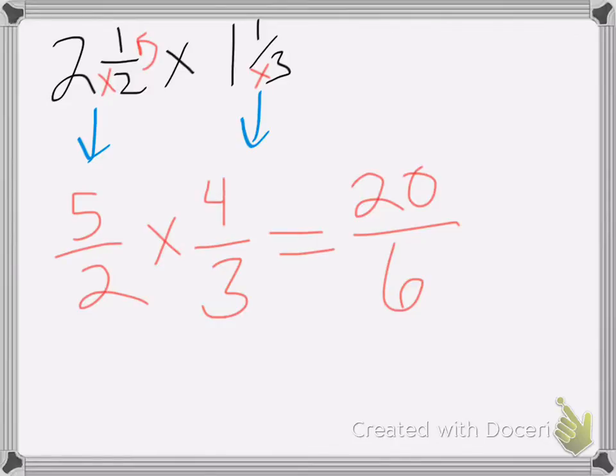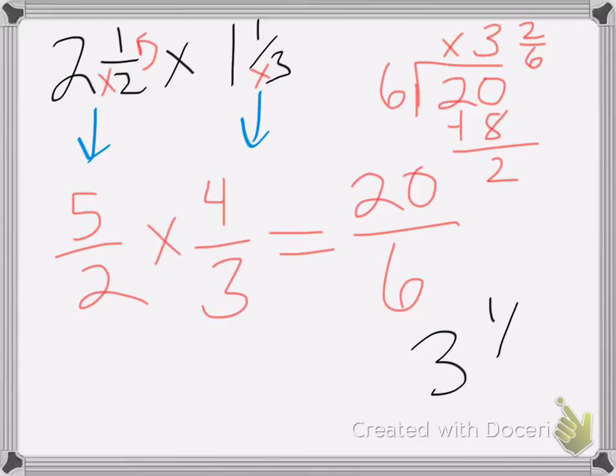Again, we can divide it. If you're not sure, six goes into two zero times. Can't do it. Six goes into twenty three times. That's eighteen. Subtract it. Have two left over. So my answer is three and two-sixths, which reduces down to three and one-third.